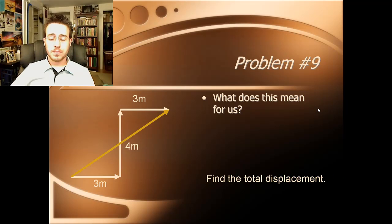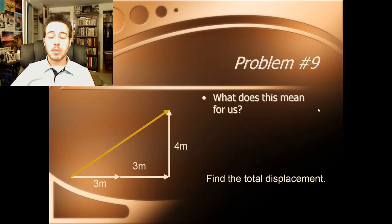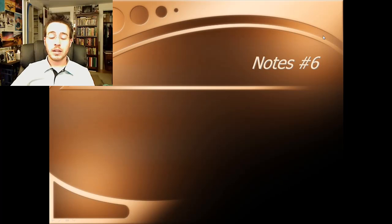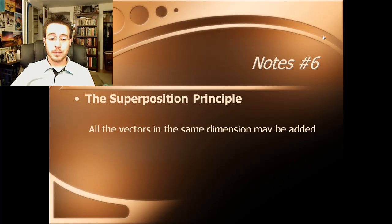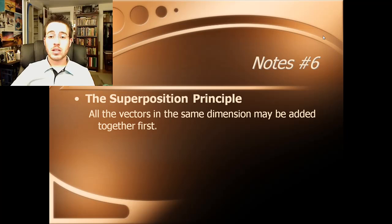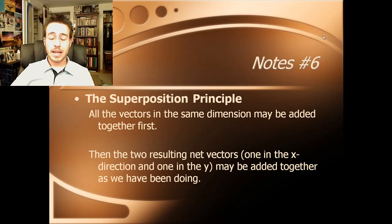Superposition principle would tell us that, instead, we could do the problem like this. And it makes it much, much easier. Instead, we add the 3 and the 3 to get 6 meters and then we have a 6 meter and a 4 meter triangle that will give us our resultant. So, more explicitly, superposition principle. What you need to do is add all the vectors in the same dimension, meaning the x's or the y's, add those all together first. Then, take the two resulting net vectors, the one in the x direction and the one in the y direction, to get the answer just like we've been doing thus far.